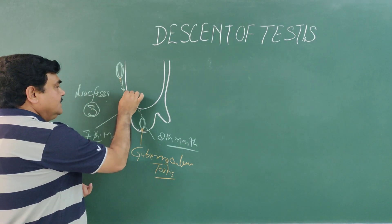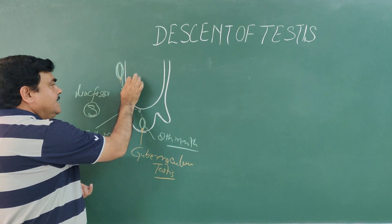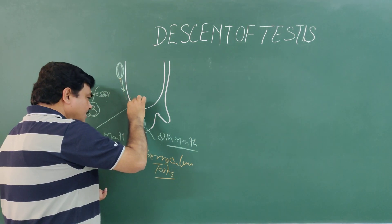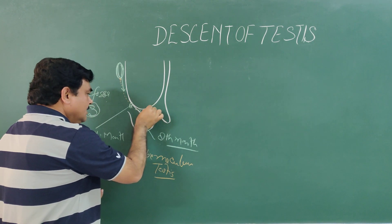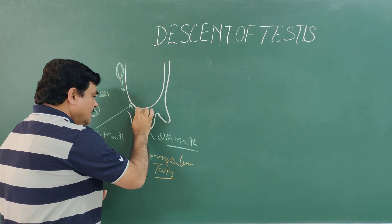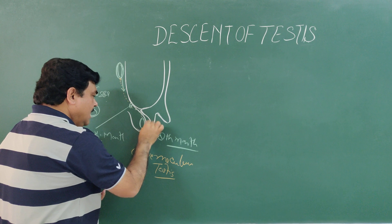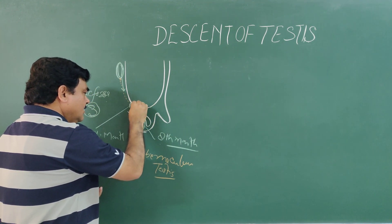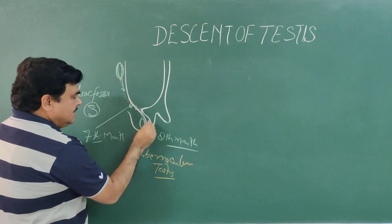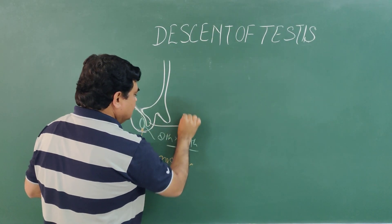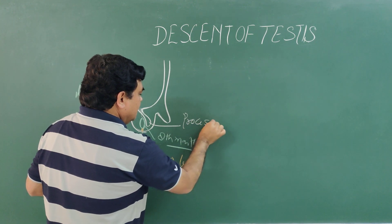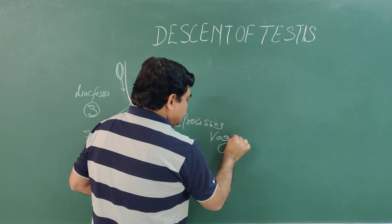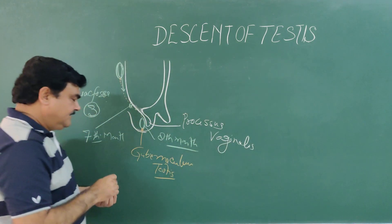During descent, one important thing: this is abdominal cavity, this is peritoneal lining. This peritoneal lining also descends along with this and forms the processus vaginalis. This extension of peritoneum is processus vaginalis.